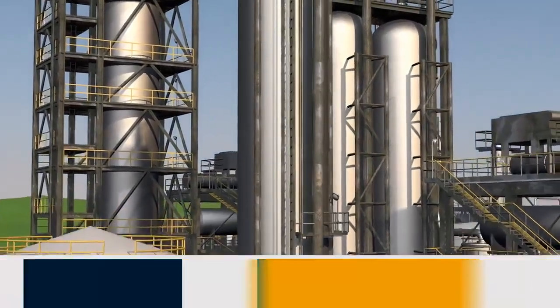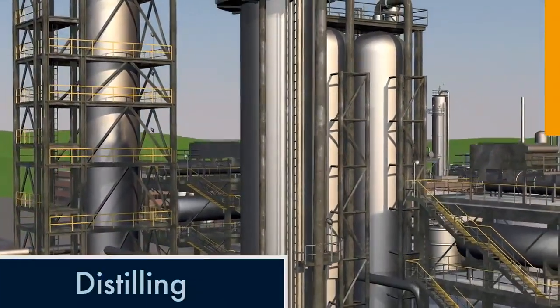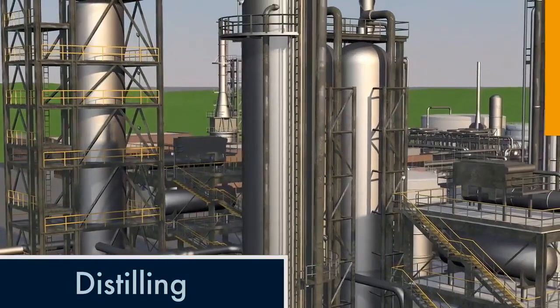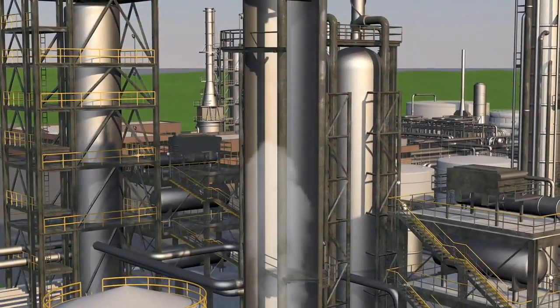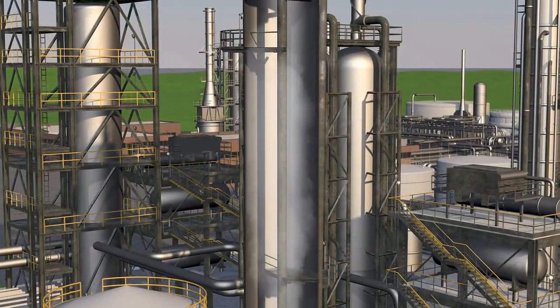Refining begins with a process called distilling. After oil is superheated, it becomes vapor. The vapor is fed into the distillation unit.